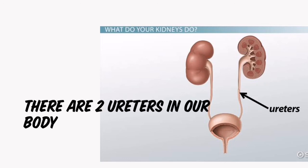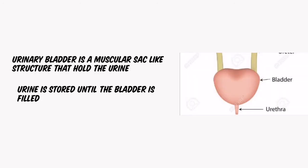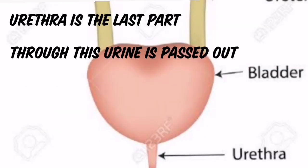There are two ureters in our body — these are the fine tubes through which urine formed in the kidneys is passed on. From the ureter, urine passes into the urinary bladder. The urinary bladder is a muscular sac-like structure that holds our urine. When the urinary bladder is filled, we have an urge to go to the washroom, and the urine is then passed into the urethra, which is the final part of the urinary system.